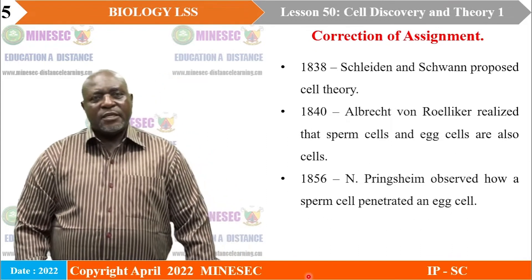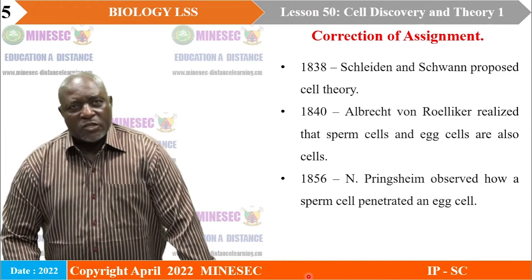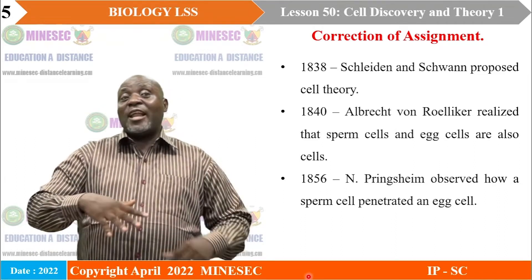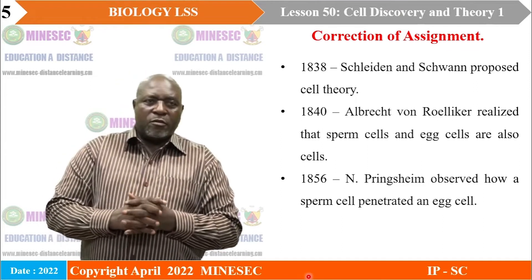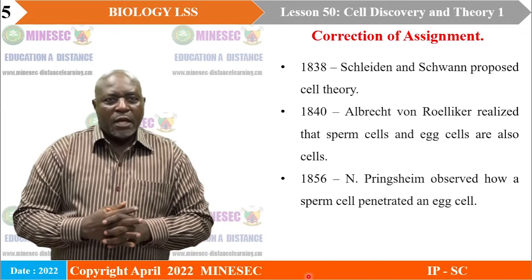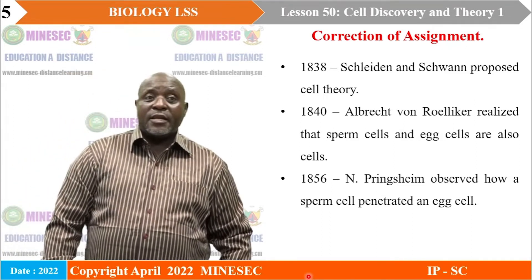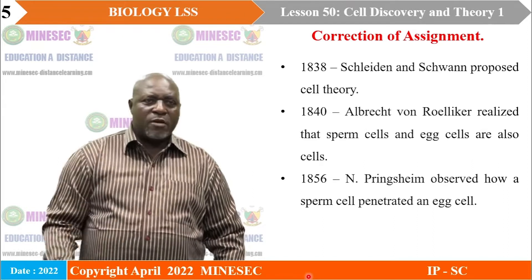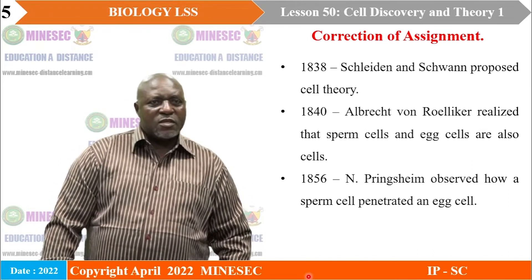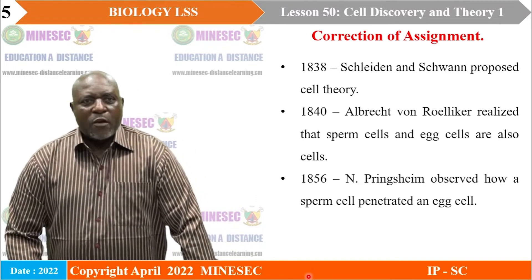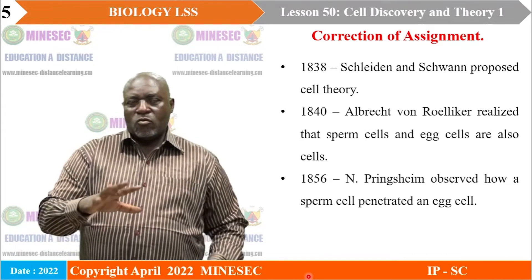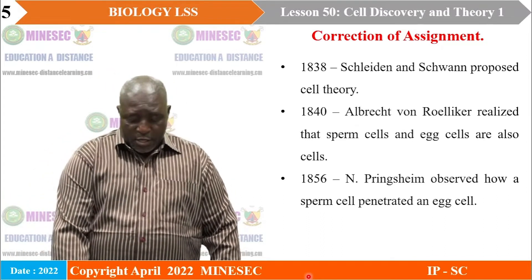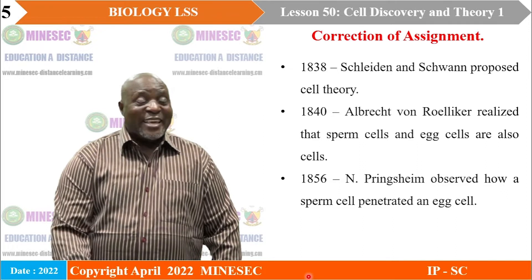In 1838, two German scientists — Schleiden and Schwann — proposed the cell theory, generalizing some of the findings about the cell. In 1840, Albert von Kölliker realized that sperm cells and egg cells were also cells. In 1856, Pringsheim observed how a sperm cell penetrated an egg cell, showing that two cells can come together — details we see in recent-day publications.